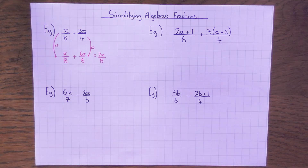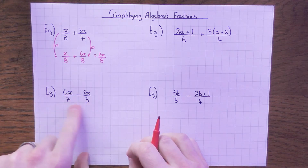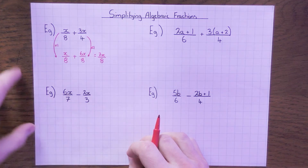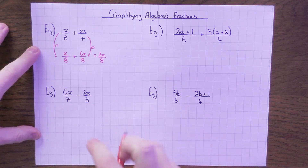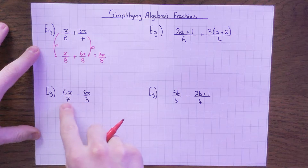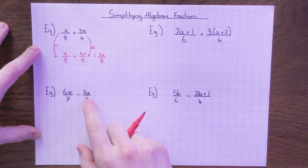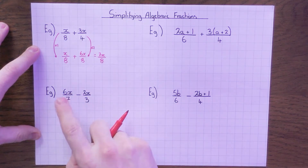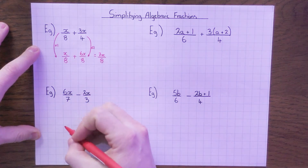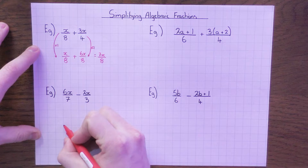Same with this one down here — this time I'm subtracting. Same rules apply: I need to make the denominators the same. So what's in the 7 and the 3 times table? To get a common multiple, I can times them together. So 7 times 3 is 21. Therefore 21 is in the 3 times table and it's in the 7 times table.